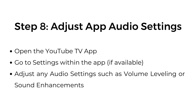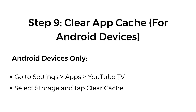Step number eight: adjust app audio settings. Open the YouTube TV app, go to settings within the app, and adjust any audio settings such as volume leveling or sound enhancements. Step number nine: clear app cache — for Android devices only. Go to Settings, then Apps, then YouTube TV, select Storage, and tap Clear Cache.